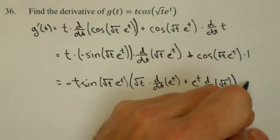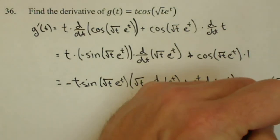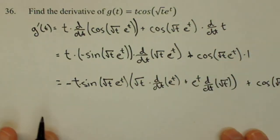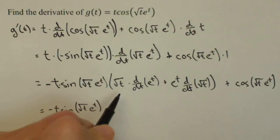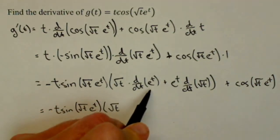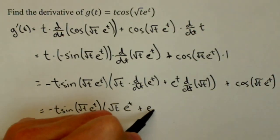Now that needs to stay with that part. Plus cosine of square root of t e to the t. Equals negative t sine of square root of t e to the t. Square root of t, derivative of e to the t. Our favorite derivative is just e to the t. Plus e to the t.